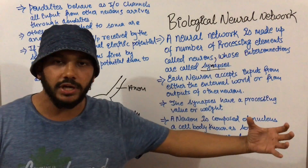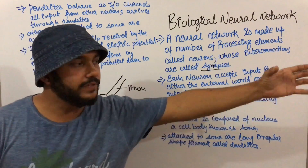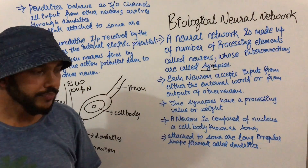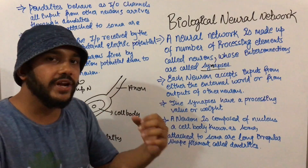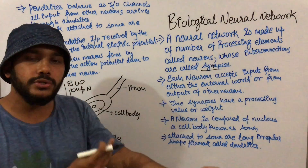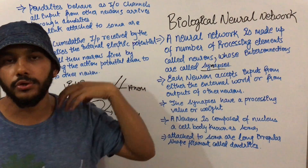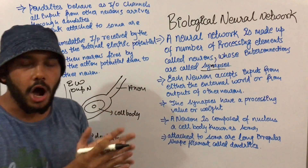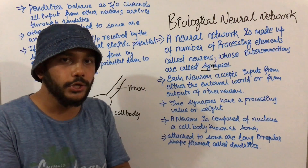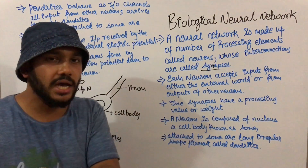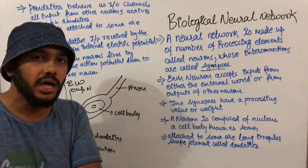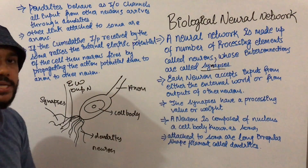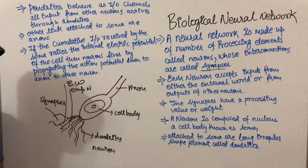Our neurons take input from two different entities: first, the external world — like I have touched a hot cup of coffee — and second, from the output of internal neurons. For example, neurons at my shoulder will pass this information to my brain. So the output from one neuron is passed as input to another neuron through synapses, which are the interconnections between neurons.